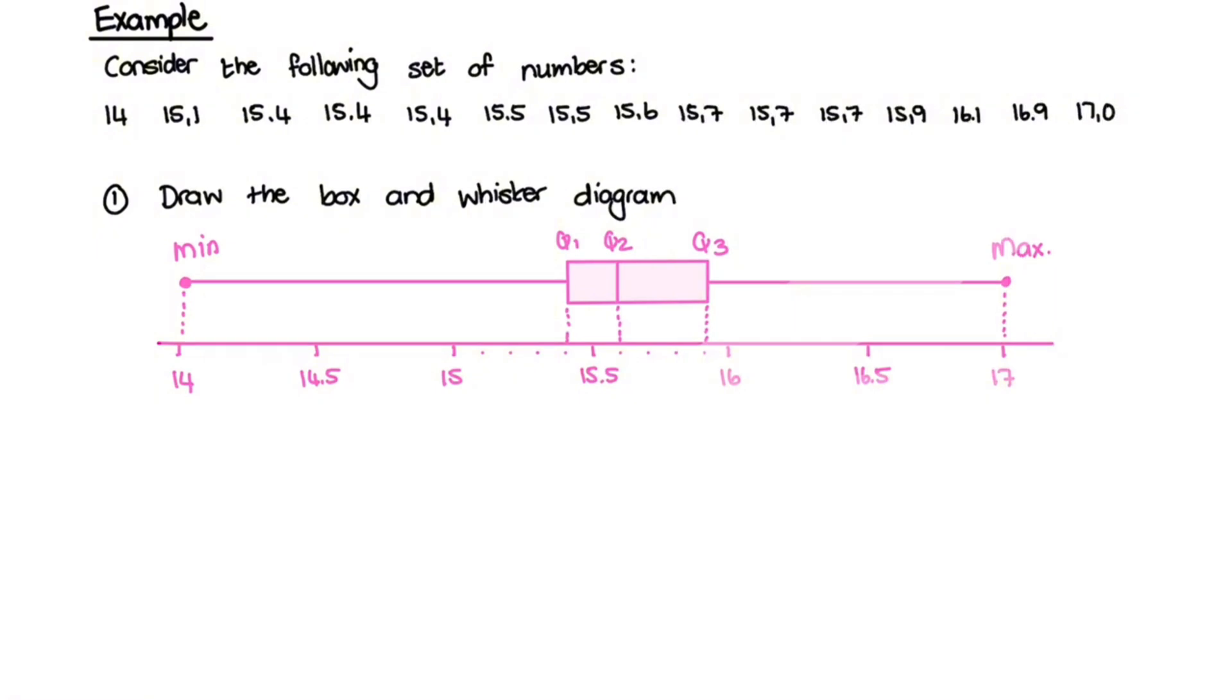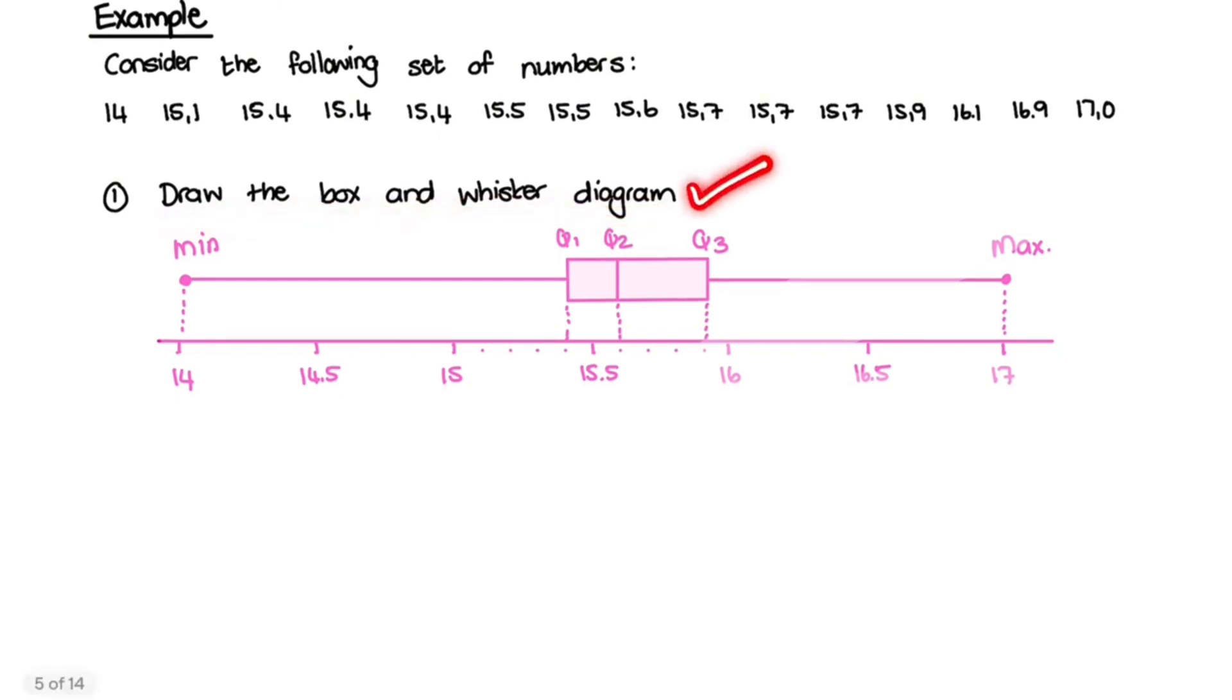Let us jump into our example. The first question that we have here is draw a box and whisker diagram. Now we have learned how to do this in our first video, but we will need it later when we discuss the outliers. So a quick revision for the box and whisker diagram. We need the minimum value, which is 14, and the maximum value, which is 17. And we indicate those values on a number line. Next, we need to identify the lower quartile, the upper quartile, and the median.